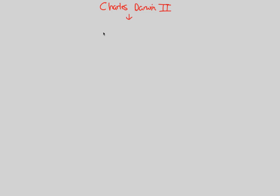So what did Charles Darwin state? At this point, you should just know that Charles Darwin stated the following: NS, which is natural selection, is the mechanism for evolution. He basically explained how evolution happens, and he says in two words, evolution happens through natural selection. Descent with modification happens through natural selection. How did he come up with this, why did he come up with this, and what does this mean for you as a general biology student? Let's see.